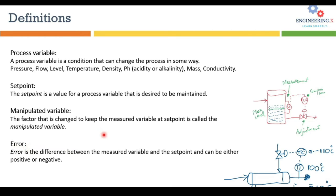Error is the difference between the measured variable and the setpoint, and it can be either positive or negative. For example, in a heat exchanger, the temperature of fluid coming out is at 100°C but the setpoint given to the temperature controller is 110°C. The difference between the measured value and the setpoint is called error. In control strategy we want the error to be minimized, but error involves many factors which we will explain in more detail.